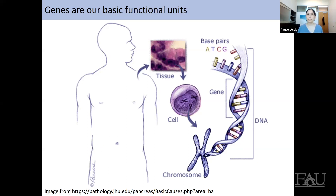If you take a microscope and zoom in on those organs, you'll see layers we call tissues. Zoom in further and you'll see millions of cells. Inside those cells are structures called chromosomes. Humans have 46 chromosomes in each cell — 23 from our father, 23 from our mother. Each chromosome has a long strand of DNA. DNA is a double-stranded helix formed from four bases denoted by letters A, T, C, and G. These bases form pairs — A with T, and C with G — called base pairs. Counting all the base pairs in the human genome across all chromosomes, there are over 3 billion of them.